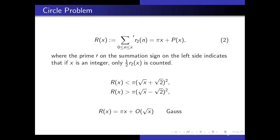Gauss first examined this problem. He observed that all the red squares lie within a circle of radius √x + √2, and a circle of radius √x − √2 is completely covered. Taking these two inequalities together, R(x) = πx + O(√x). The famous Gauss circle problem then asks for the optimal upper bound for P(x) as x tends to infinity.